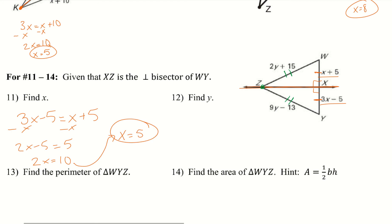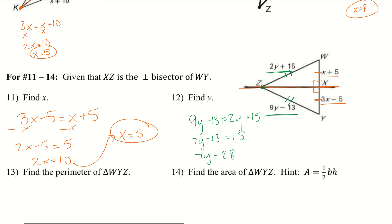For Y, we have 2Y plus 15 and 9Y minus 13. Since Z is on the perpendicular bisector, these two lines are congruent, so I set them equal. Subtracting 2Y from both sides gives 7Y minus 13 equals 15, adding 13 gives 7Y equals 28, divide by 7, and Y equals 4.